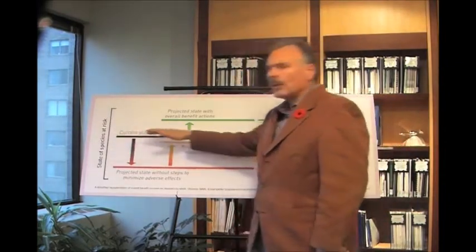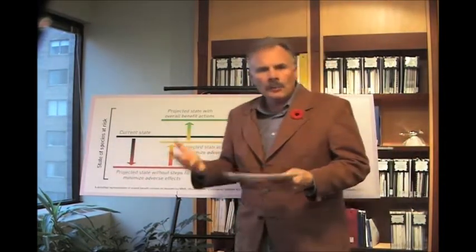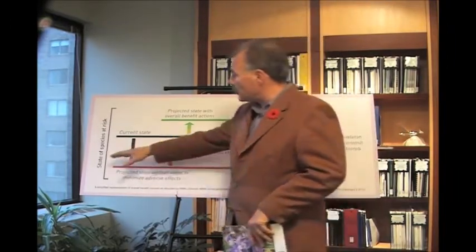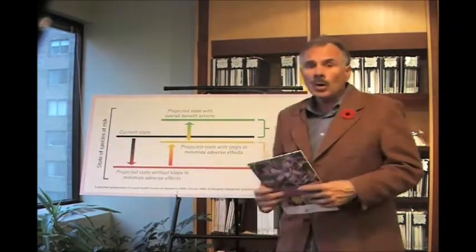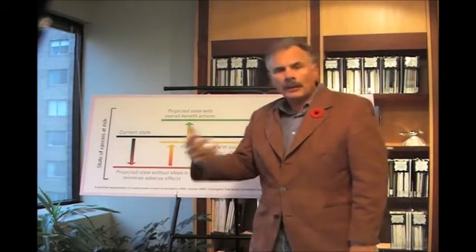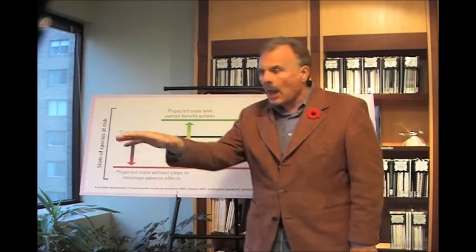This black line is just the current state of a species labeled as endangered or threatened. We already know it's in trouble to some degree. So that's the state of species at this level. Well of course, we run our economy, we do things in society that impact the land, impact the habitat of the species, sometimes directly impact the species.